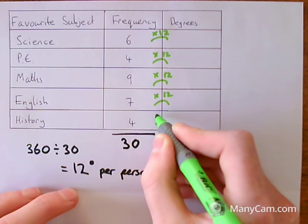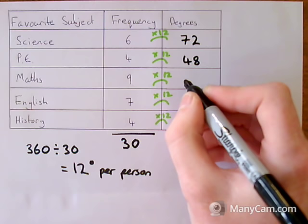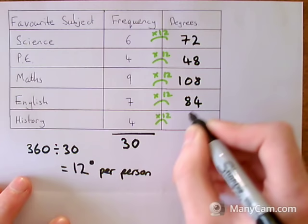All of my frequencies by how many degrees it is per person. And then when I work these out, 6 times 12 is 72. 4 times 12 is 48. 9 times 12 is 108. 7 times 12 is 84. And then 4 times 12 is 48.